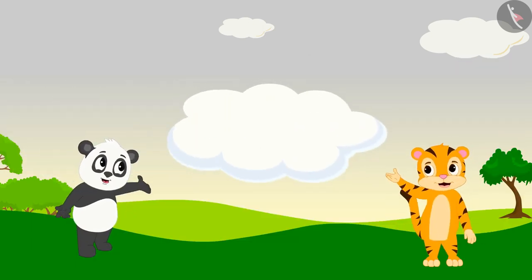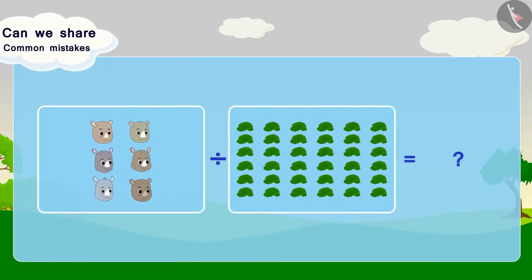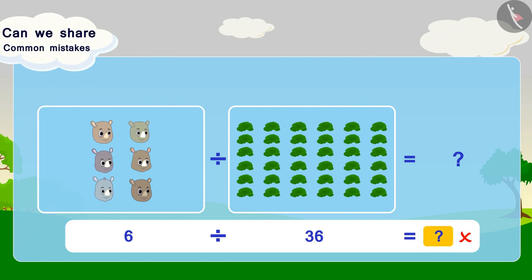Now, let us look at option 2. In this option, 6 friends are being divided into 36 grass clusters, which is wrong according to this question. For this reason, this option is incorrect.